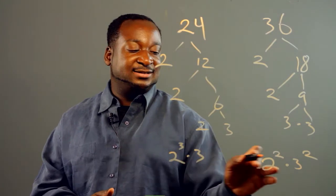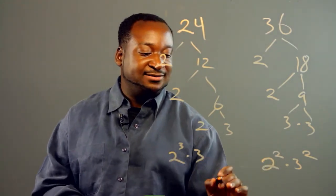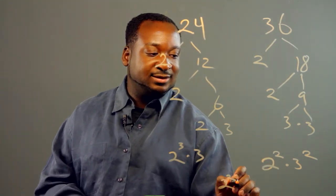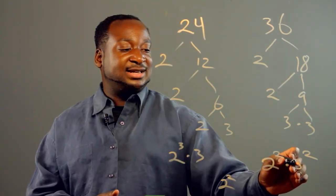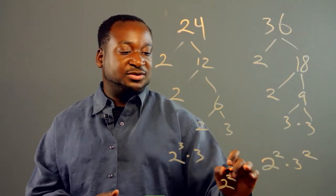Now we see that there's a 2 in both of them, so we'll take the highest degree, which is 2 squared, and then we'll take a 3 in both of them, there's a 3 in both, so we'll take a 3.